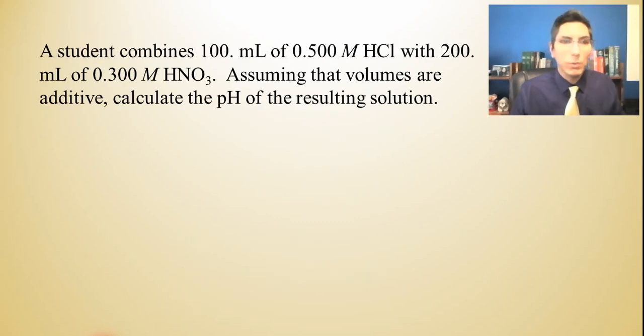Let's do one more problem before we stop for this video. A student combines 100 milliliters of 0.5 molar HCl, hydrochloric acid, with 200 milliliters of 0.3 molar nitric acid. Assuming that the volumes are additive, calculate the pH of the resulting solution. Now, some students have a little trouble with these kinds of problems. Don't make them more difficult than they need to be.